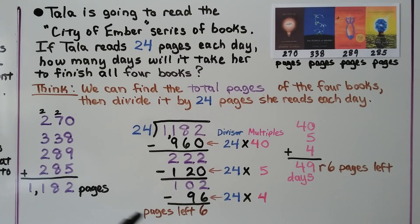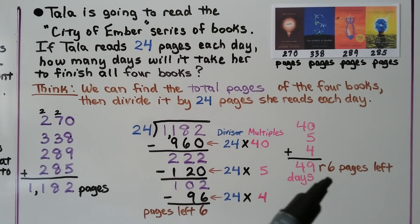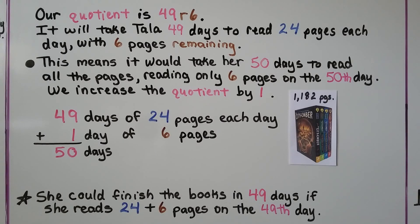We have a remainder of 6 — that would be 6 pages left. We add 40, 5, and 4 to get 49 days, but she would still have 6 pages left. Our quotient is 49 remainder 6. It will take Tala 49 days to read 24 pages each day, with 6 pages remaining. This means it would take her 50 days to read all the pages, reading only 6 pages on the 50th day.